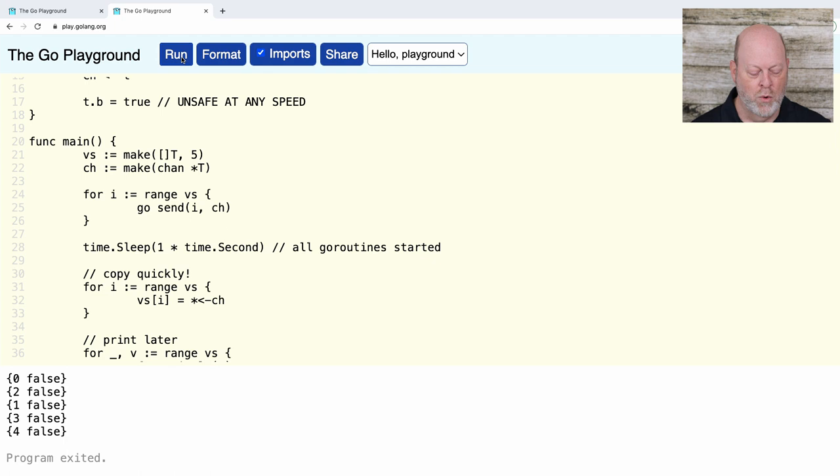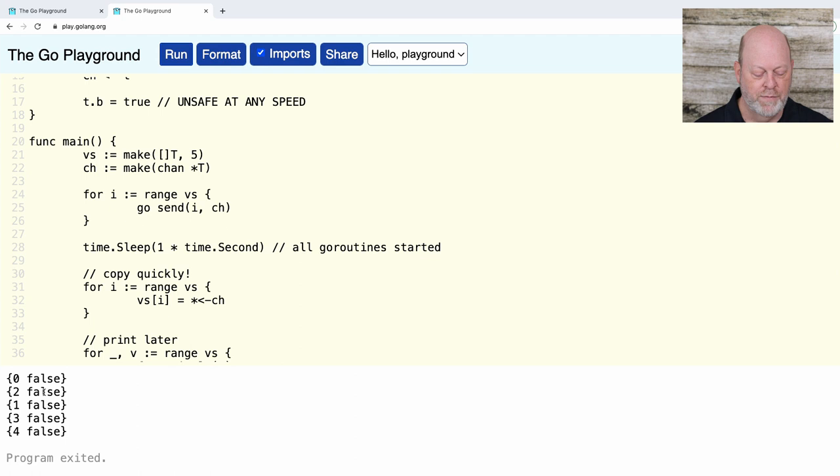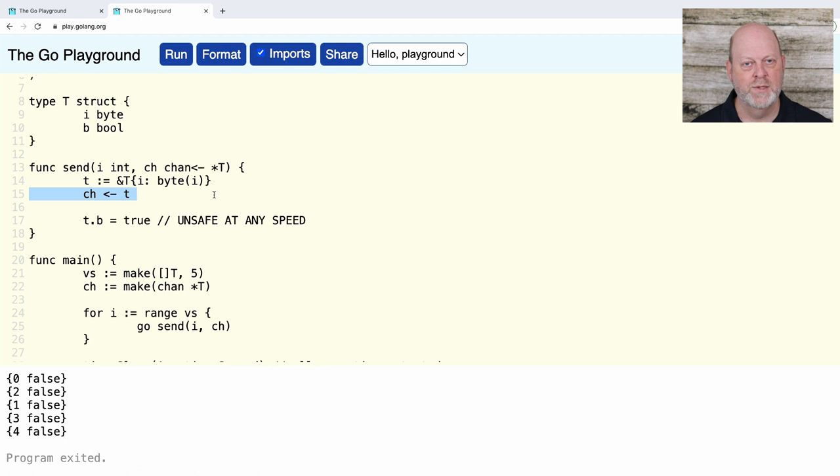So, what happens when I run the program? Now, the order of numbers down here is random because I've got these Go routines and they run at random. Notice the values are all false. Why is that? In my send function, I'm doing a blocking send, and I'm doing a rendezvous.